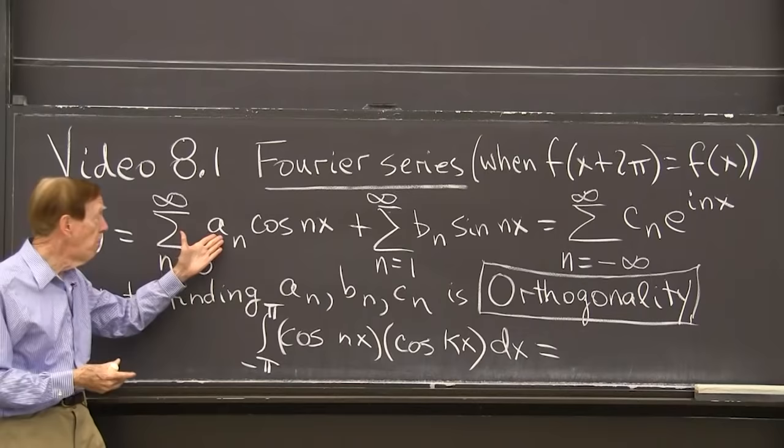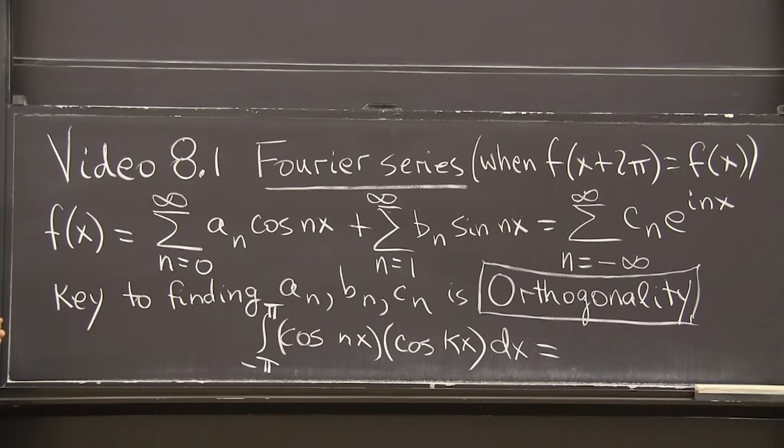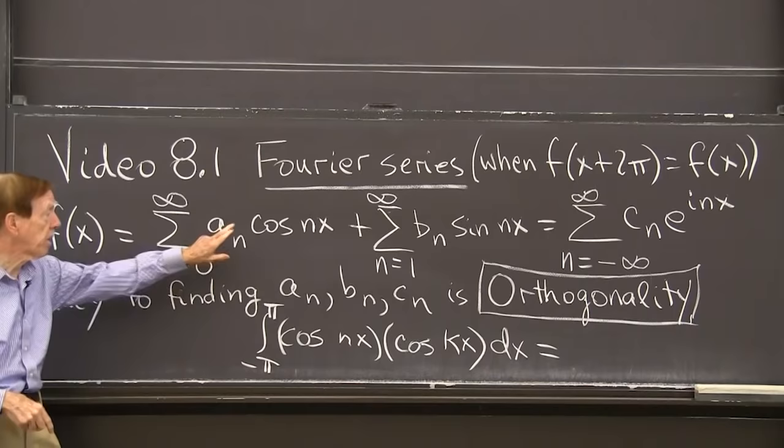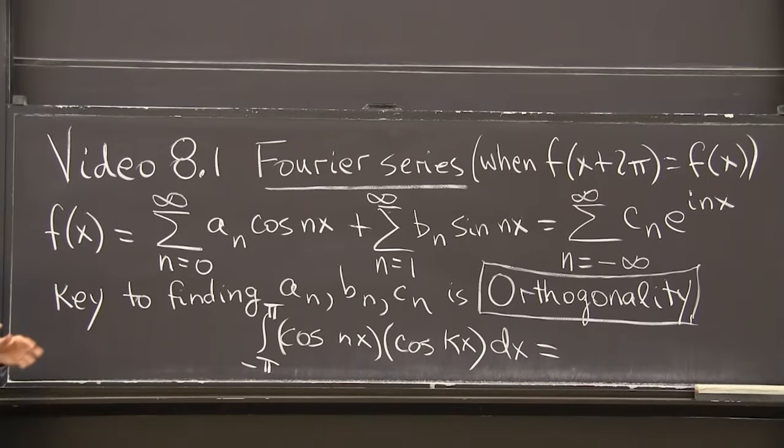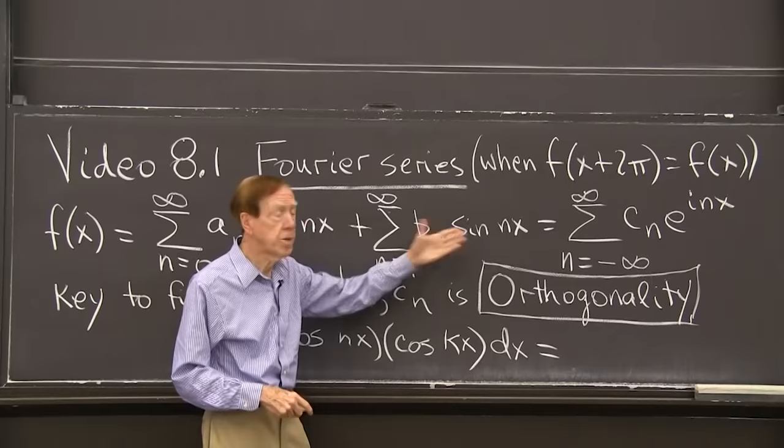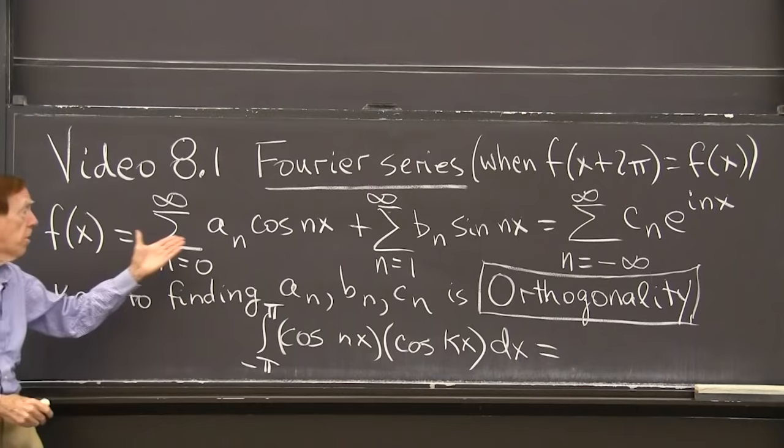And the a_n's and the b_n's are the coefficients that we have to look for. That tells us how much of cosine nx is in the big function f(x). Notice that the cosines start at n equals 0, because cosine of 0 is 1. So there's an a_0 in our sum. But there isn't a b_0, because n equals 0, the sine would be 0.